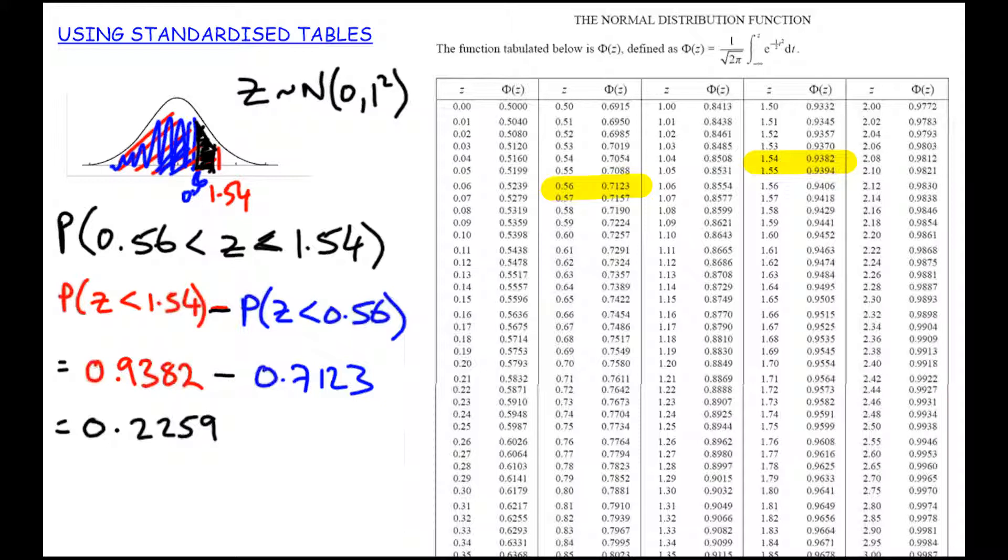We started with the larger value. We found out the area below that. We started with the second or the smaller value, and we found the area below that. And we subtracted the two of them from each other, which left us with the probability statement that answered the original question.